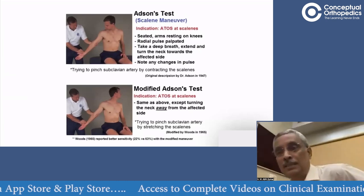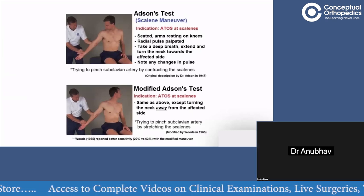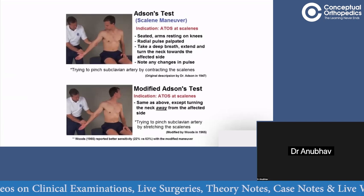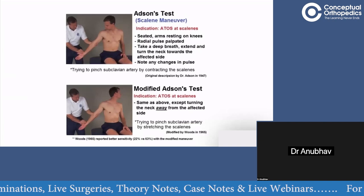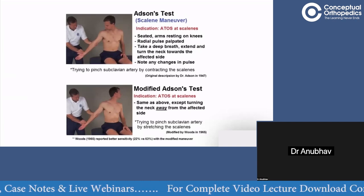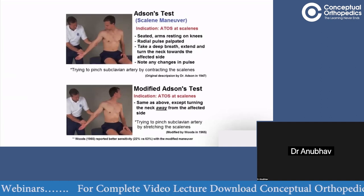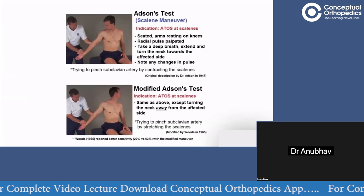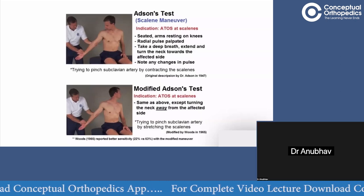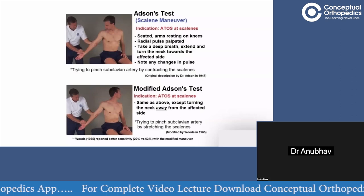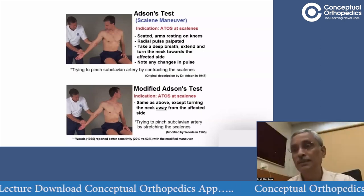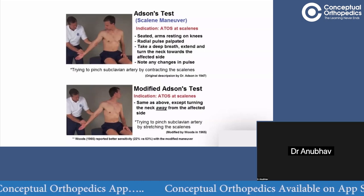There is the Adson's test and the modified Adson's test. In the Adson's (scalene maneuver) test for thoracic outlet syndrome: the patient is seated with arms resting on the knees, radial pulse is palpated, the patient takes a deep breath, extends and turns the neck toward the affected side, and any change in the pulse is noted. The modified Adson's test is the same except the neck is turned away from the affected side.